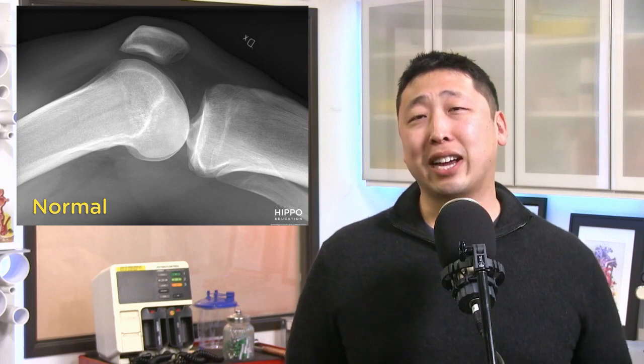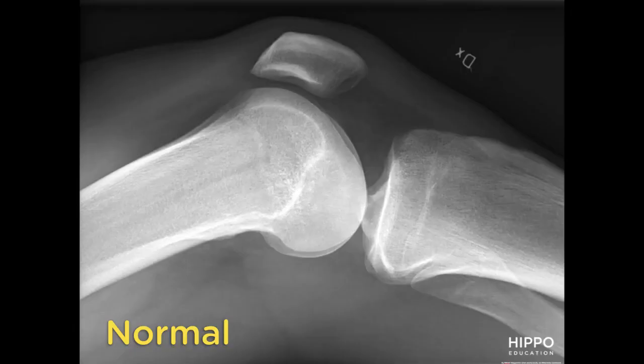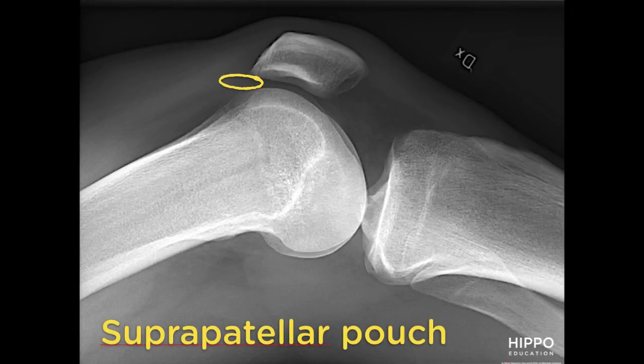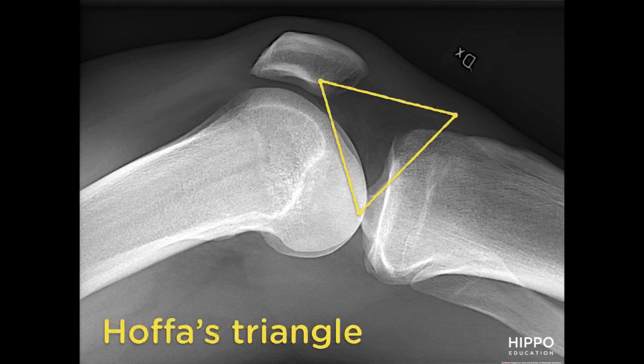This is a normal lateral knee x-ray. There are four main structures to note. First is the suprapatellar pouch — in a normal knee, the suprapatellar pouch is not prominent. Second, you can see that the quadriceps tendon is straight and the posterior border of the quadriceps tendon is clearly defined and not blurred in a normal knee x-ray. Third, Hoffa's triangle, or the area around the anterior femoral condyles, in a normal knee is radiolucent or dark.